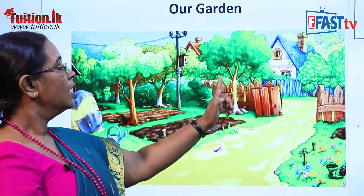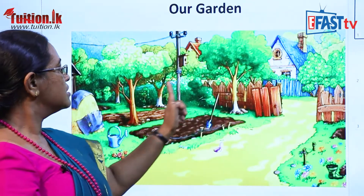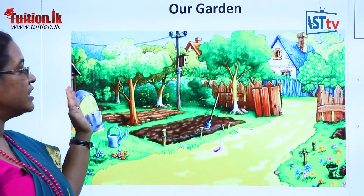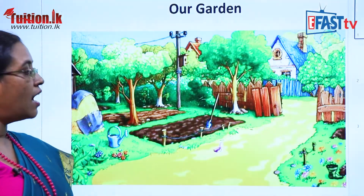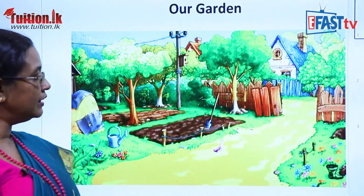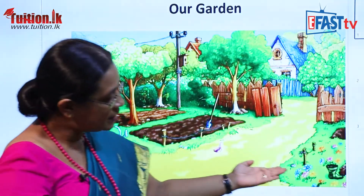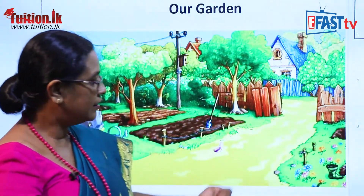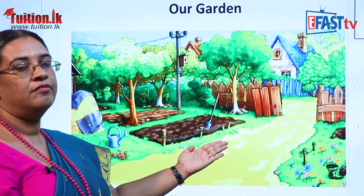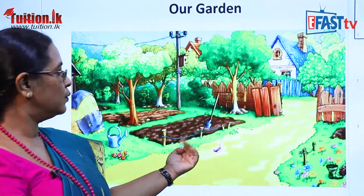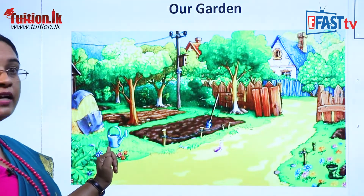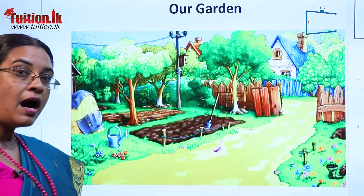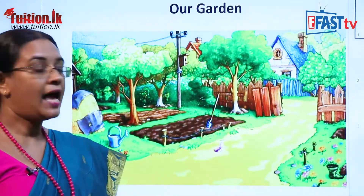And you can see trees — one, two, three, four. More than four trees are there in the garden. Then you can see some beautiful flowers in the garden. Then you can see a shovel. A shovel. Then you can see a watering can. We call it a watering can.